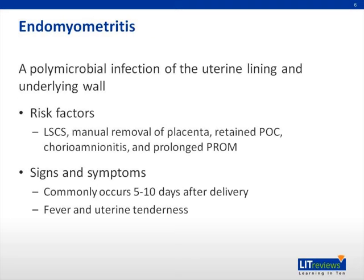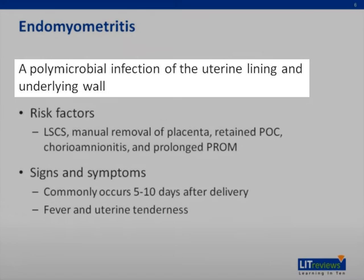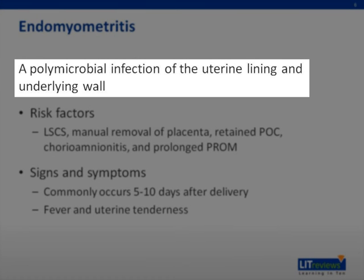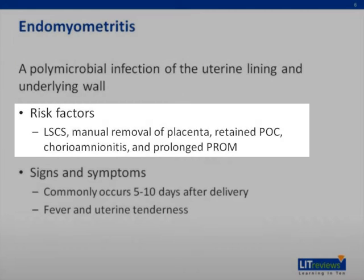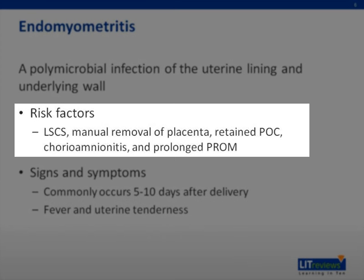The first postpartum infection we will discuss is endomyometritis. Endomyometritis is a polymicrobial infection of the uterine lining and underlying wall. Risk factors for developing endomyometritis include lower segment caesarean section, manual removal of the placenta, retained products of conception, chorioamnionitis, and premature rupture of membranes.